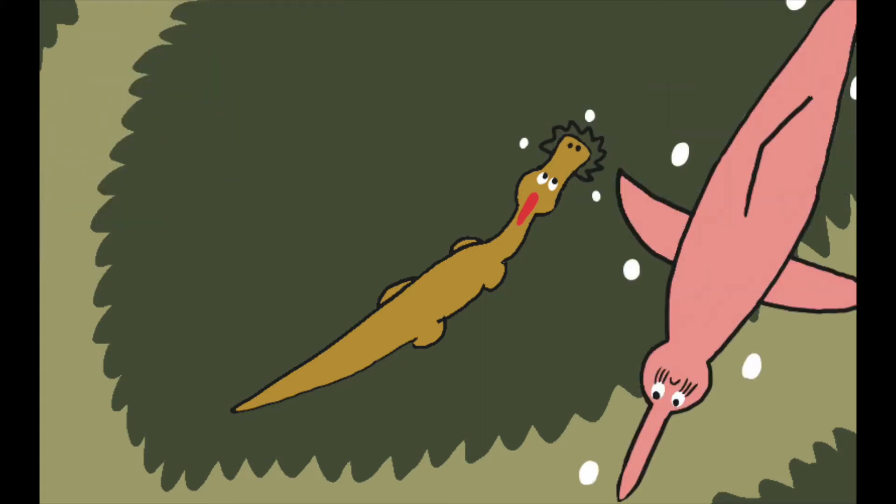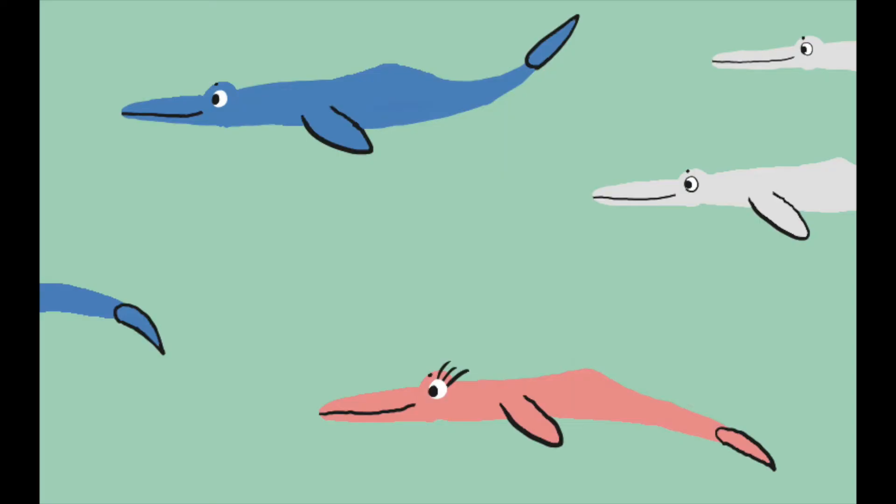Swimming above him are pods of Amazon River Dolphins, also called the Bodo. Their colors can vary from pink to bluish-gray to white. Despite their small size, the Bodo is the largest of the river dolphins, measuring 2.5 meters long.